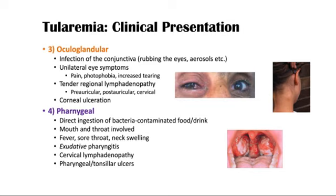The fourth clinical presentation is pharyngeal. It involves direct ingestion of bacteria through contaminated food or drinks, with the mouth and throat involved. Symptoms include fever, sore throat, and neck swelling. There is exudative pharyngitis — meaning inflammation of the throat with exudate — cervical lymphadenopathy, and pharyngeal tonsillar ulcers.